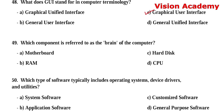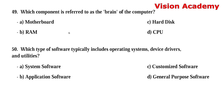Question number 49: Which component is referred to as the brain of the computer? Option A: motherboard. Option B: RAM. Option C: hard disk. Option D: CPU. The right answer is Option D, CPU — that is, central processing unit.